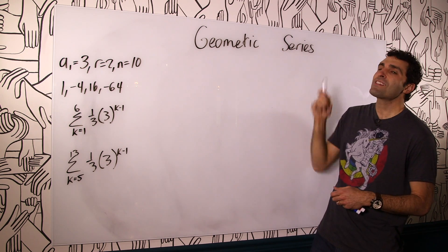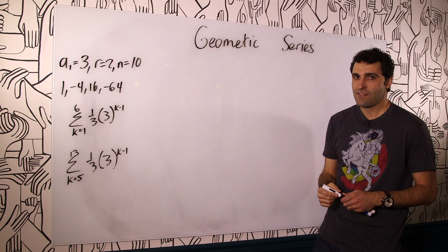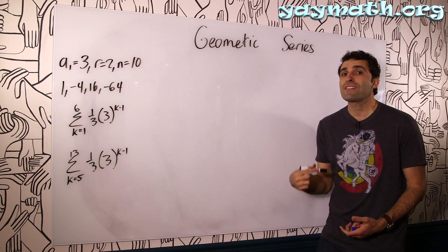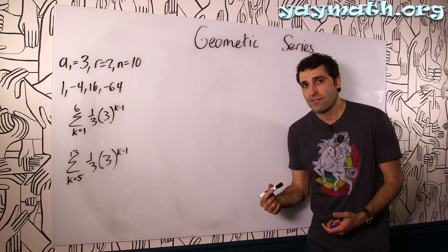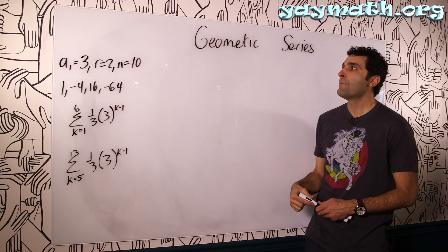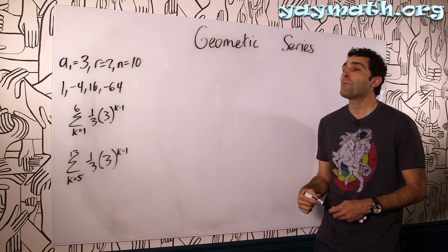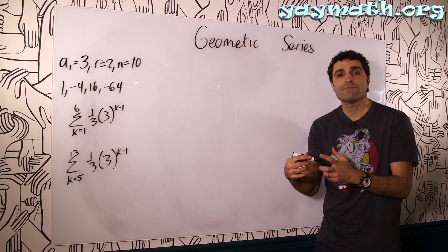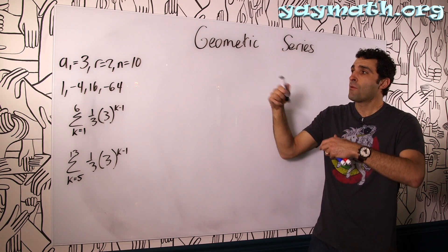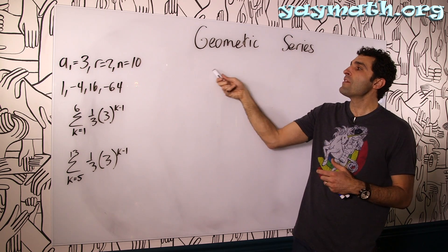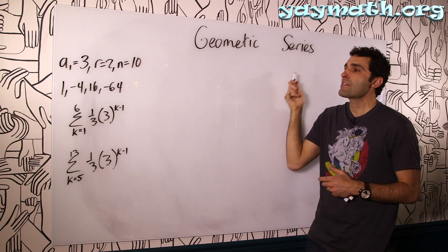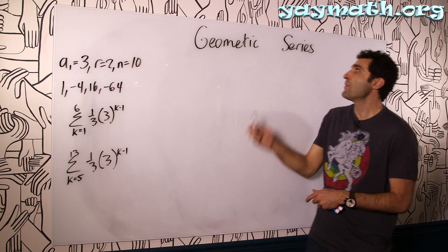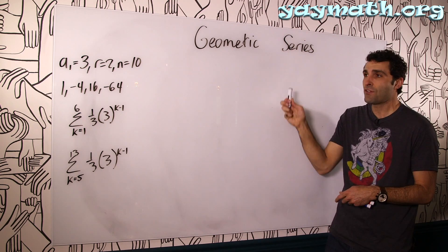This is what a geometric series is. It starts as a geometric sequence, and then we add up all the terms. We're going to put down a geometric sequence and add them all up. That's what makes it a series.